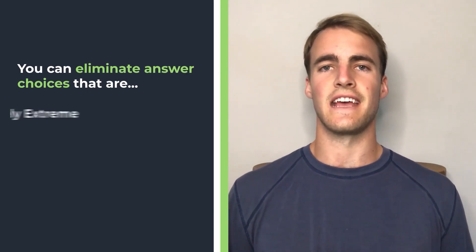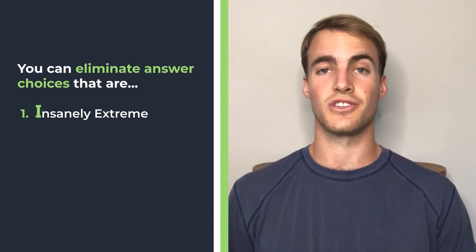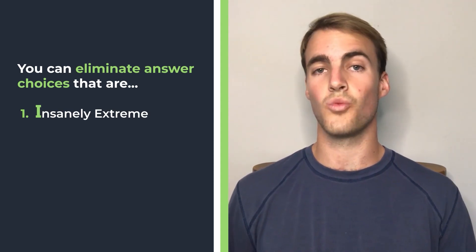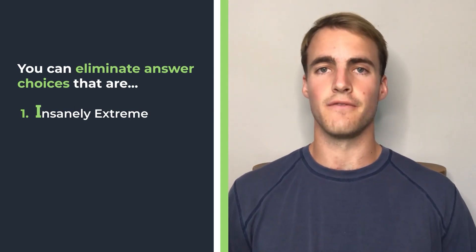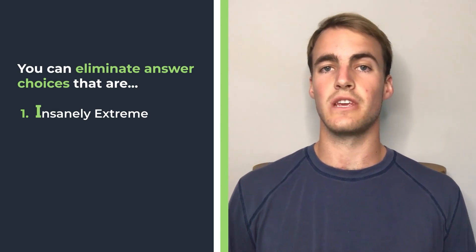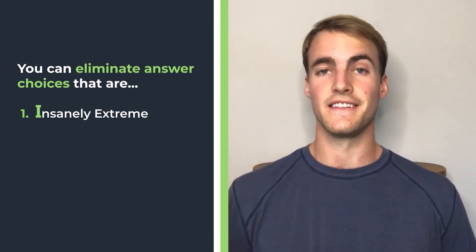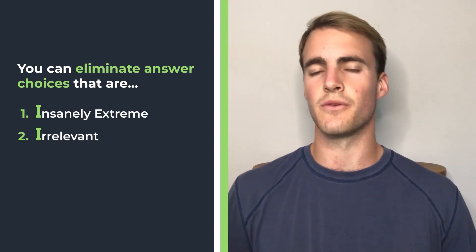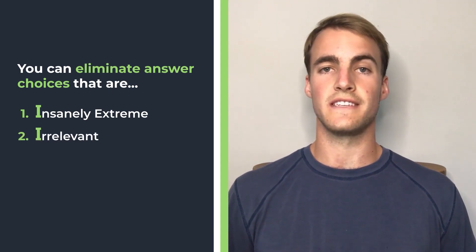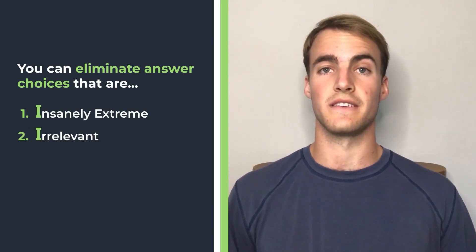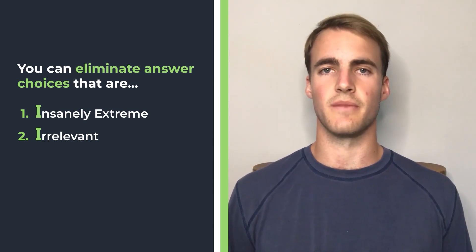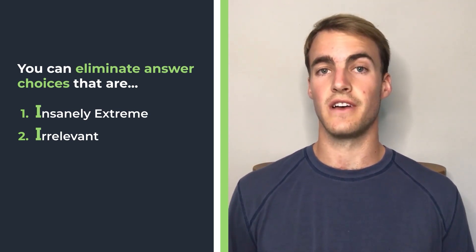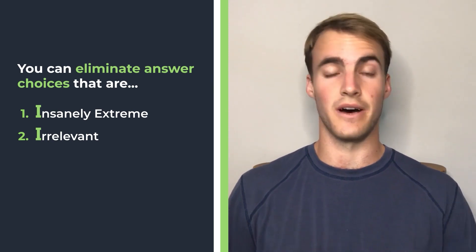The first I is answer choices that are insanely extreme. We can eliminate these answer choices if they use extreme words or voice an idea that is extreme compared to the main idea of the passage. The second I is answer choices that are irrelevant. A lot of times students will call these answer choices beyond the scope of the passage, meaning they really aren't discussed in the passage. So whenever you read an answer choice, ask yourself: does the passage actually talk about this topic?